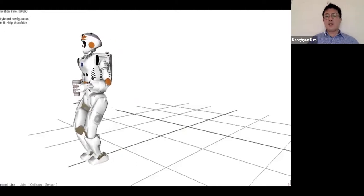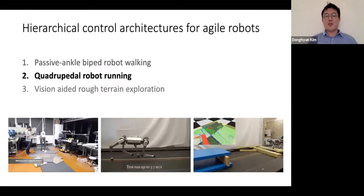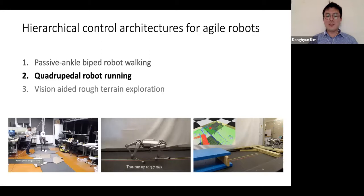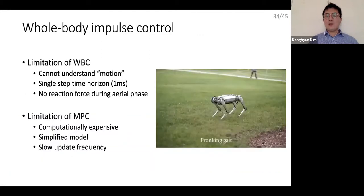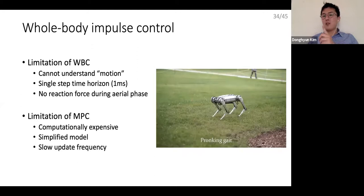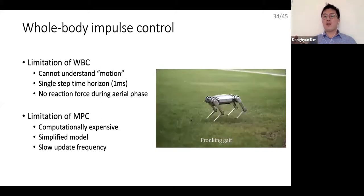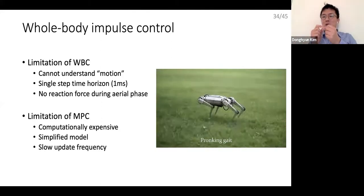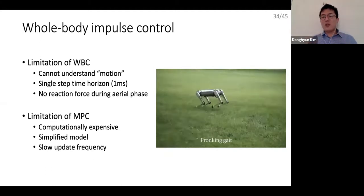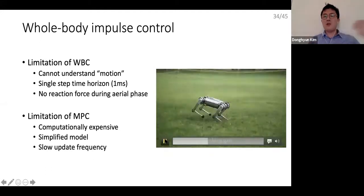Moving on to Mini Cheetah further feed running. I strongly believe whole body control is a nice controller, but I also truly understand its limitation: whole body control only sees one single control tick — it can only see a few milliseconds into the future. It doesn't know whether the robot is walking, jumping, or running; it just controls that small window. That's all whole body control can see.